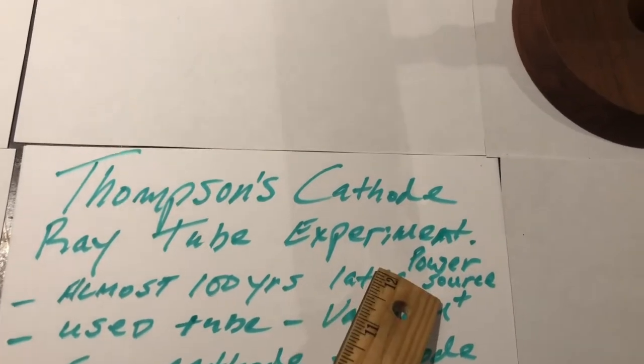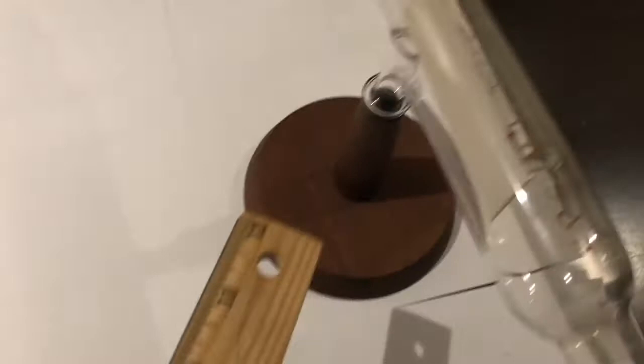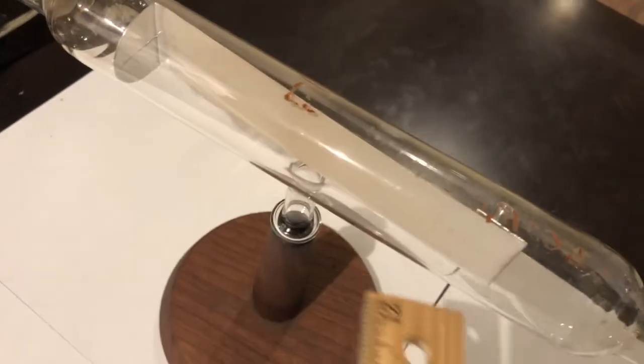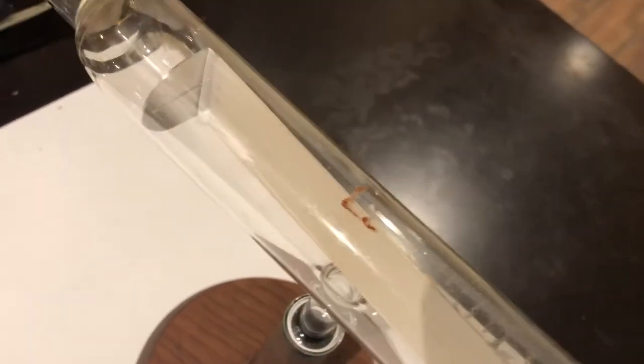He did this experiment almost 100 years later. He had a power source, and he used a vacuum tube. This tube right here, guys, most of the air, almost all the air is taken out. Now, if you see that front inside of it, you see this guy with a slit right there and this metal coated right there. He did test on metals.